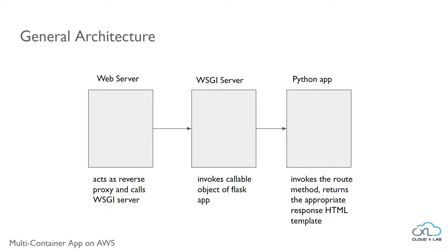When using Flask, it comes with an inbuilt WSGI server named Werkzeug to handle the requests. It is light and easy to use in testing and development environments, but it is not suitable for the production environment. Hence, we need to switch to another WSGI like UWSGI, Gunicorn, or GEvent while deploying an app in production.